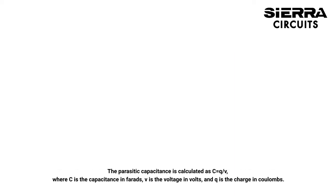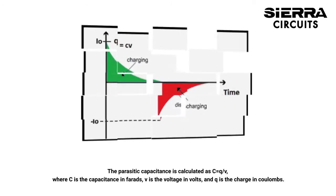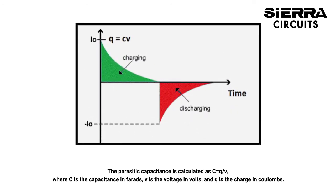The parasitic capacitance is calculated as C equals Q over V, where C is the capacitance in farads, V is voltage in volts, and Q is the charge in coulombs.